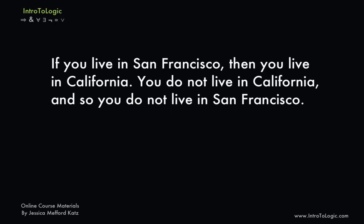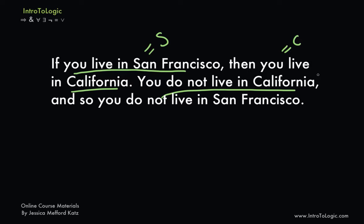Consider another example of an argument which uses modus tollens reasoning: if you live in San Francisco, then you live in California. You do not live in California, and so you do not live in San Francisco. We label our assertions: 'you live in San Francisco' is represented with the letter S, 'you live in California' with the letter C, 'you do not live in California' is 'not C', and the conclusion 'you do not live in San Francisco' is 'not S'.